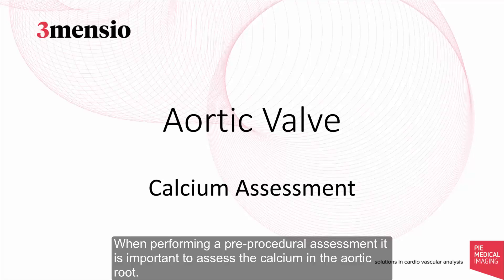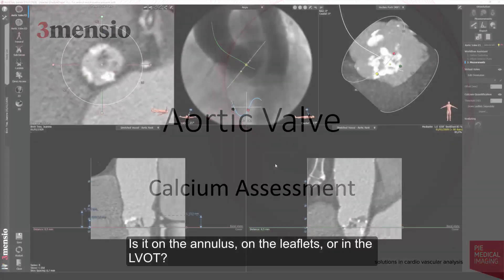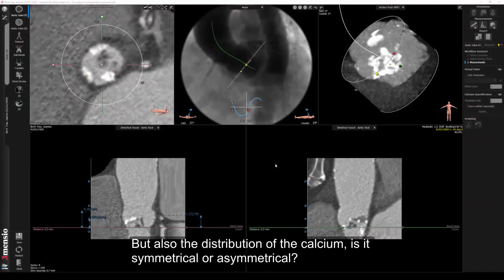When performing a pre-procedural assessment, it is important to assess the calcium in the aortic root. Relevant information is where the calcium is located — is it on the annulus, on the leaflets, or in the left ventricular outflow tract? But also the distribution of the calcium: is it symmetrical or asymmetrical?